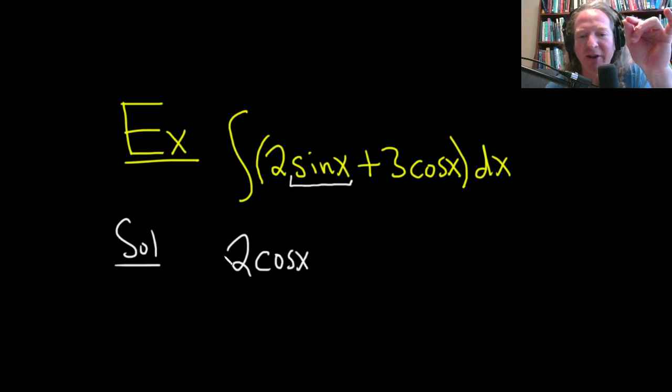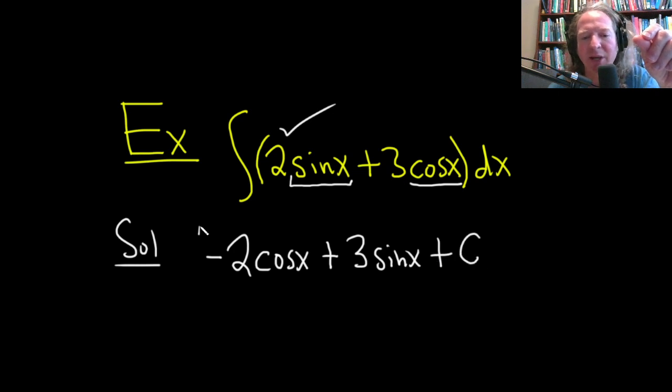I'm going to put the negative here out front. Let's check that. If we take the derivative of cosine, we get negative sine. There's a negative 2 here, so that's going to give us 2 sine x. And then we're looking for a function whose derivative is cosine. Well, the derivative of sine is cosine. So this will be plus 3 sine x plus our constant of integration, capital C.